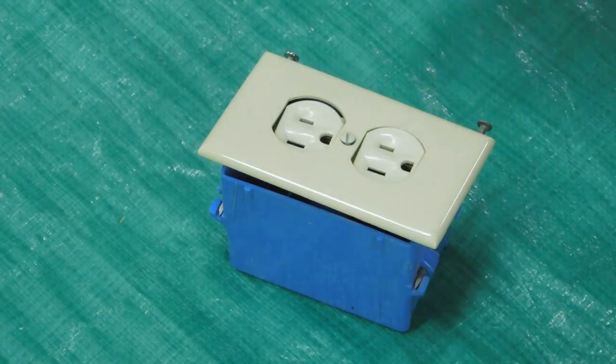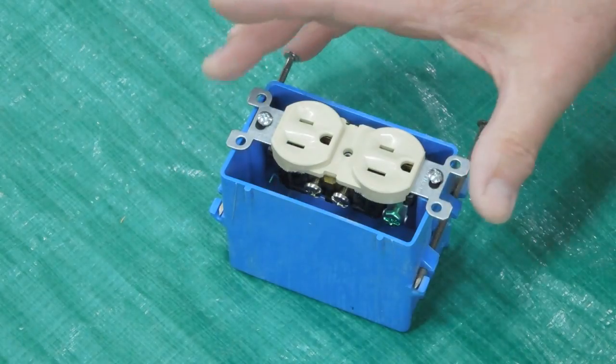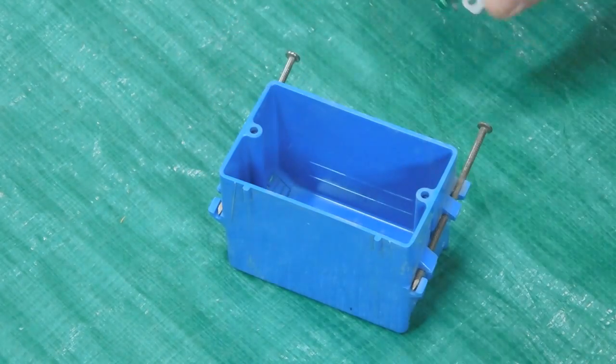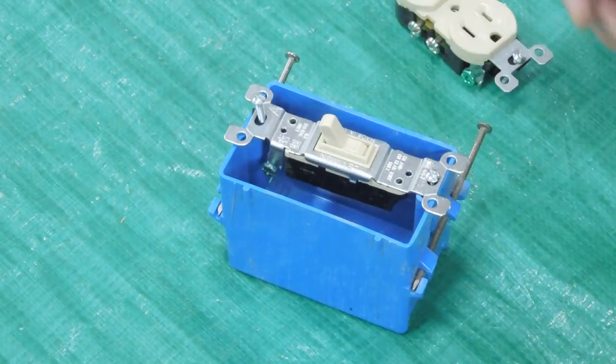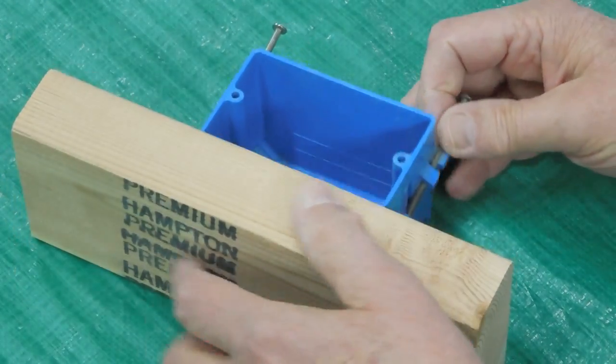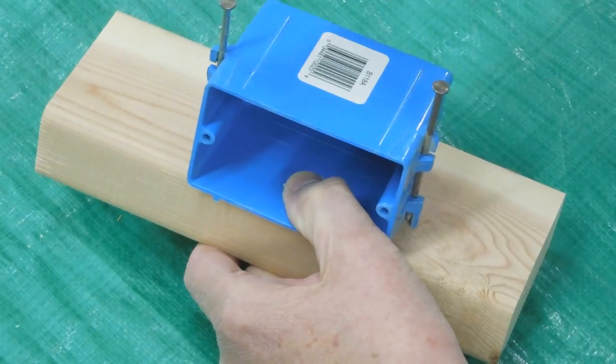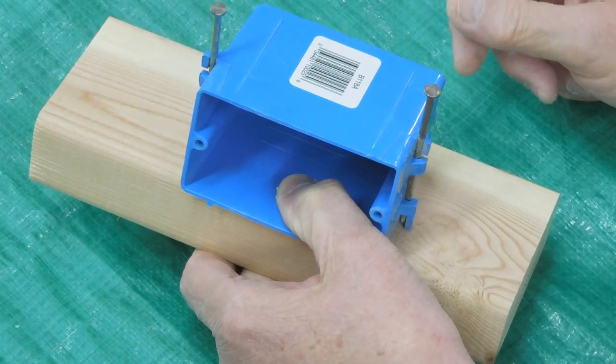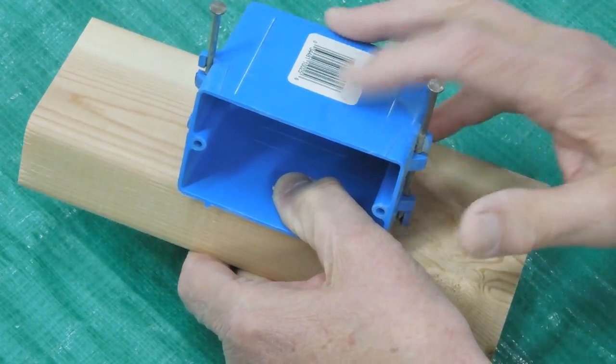This is an electrical outlet box. It'll hold a wall outlet or a wall switch. These are inside your wall. They've been nailed to a stud, usually. There are different types.